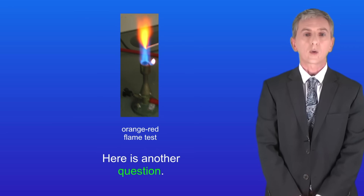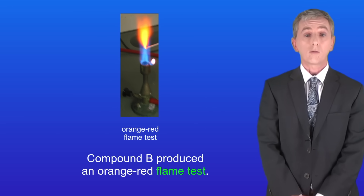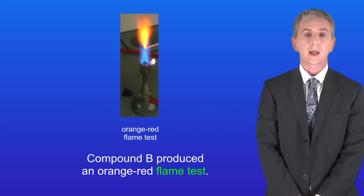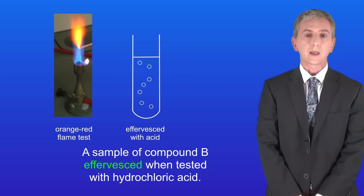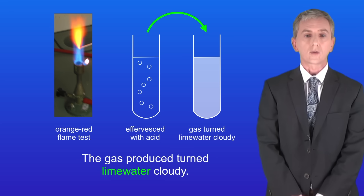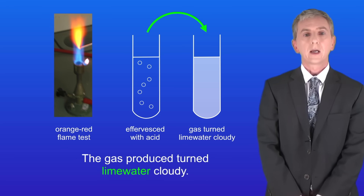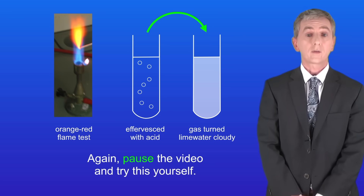Here's another question. Compound B produced an orange-red flame test. A sample of compound B effervesced when tested with hydrochloric acid. The gas produced turned lime water cloudy. Identify compound B. Pause the video and try this yourself.